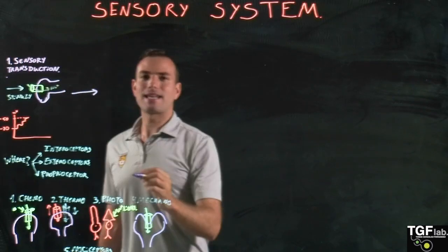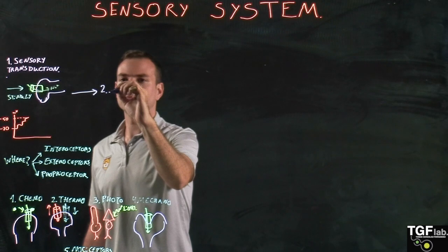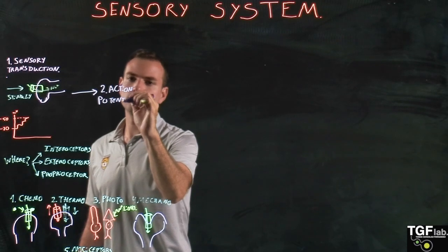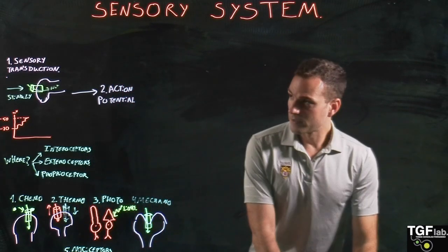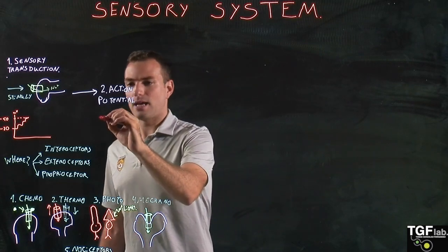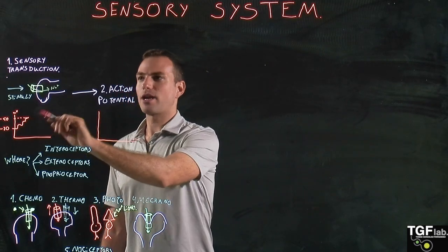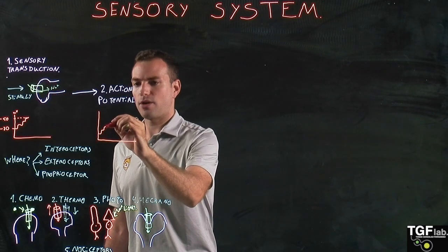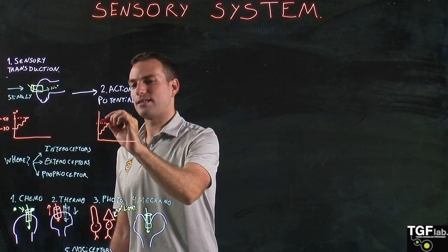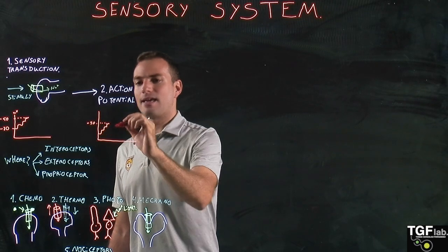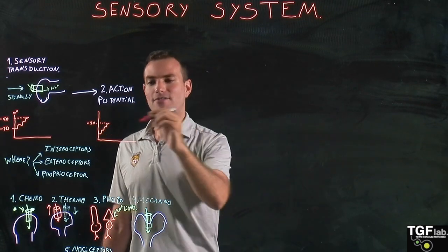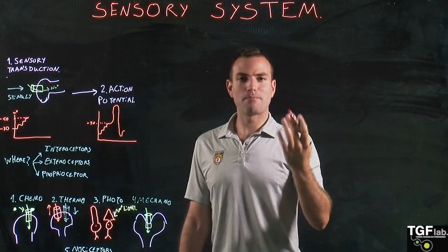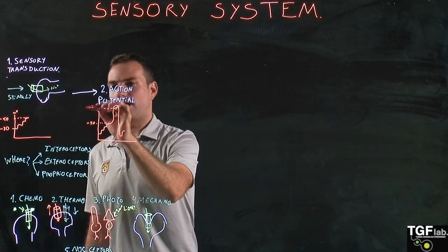The second step is the generation of the action potential. As discussed in the previous lecture, first we have the graded potential — the receptor potential — and multiple graded potentials add together until we arrive at the threshold of minus 50 millivolts. Once we arrive at that threshold, we have the action potential with membrane depolarization up to plus 30 millivolts.